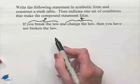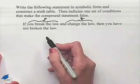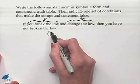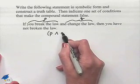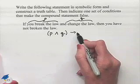Now we're going to rewrite this sentence in symbolic form. If you break the law and change the law will be the first part of a conditional: if P and Q, then you have not broken the law, that would end up being not P.